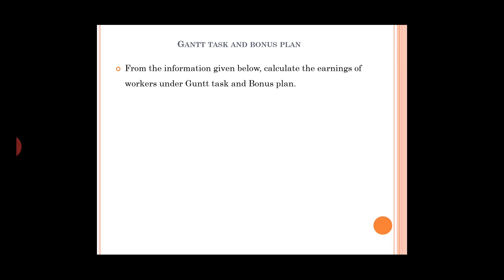Next, we will go to the question. From the following information given below, calculate the earnings of workers under Gantt task and bonus plan. Time rate is Rs. 15 per hour. High task per day of 8 hours is 80 units. High pace rate is Rs. 2 per unit. X produced 70 units, Y produced 80 units, and Z produced 90 units.